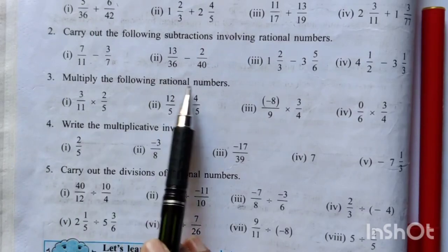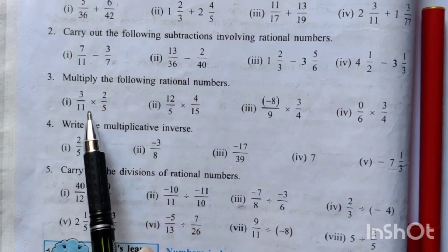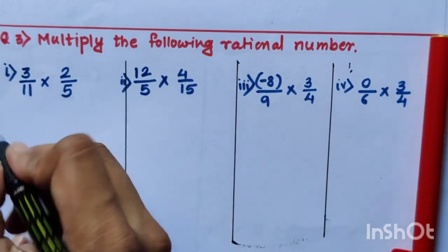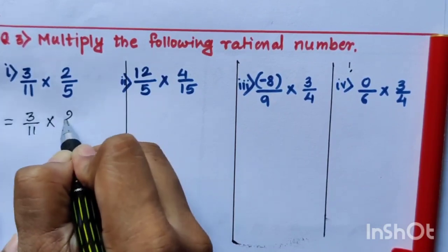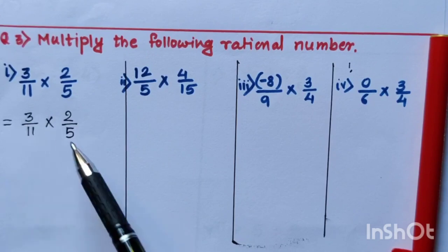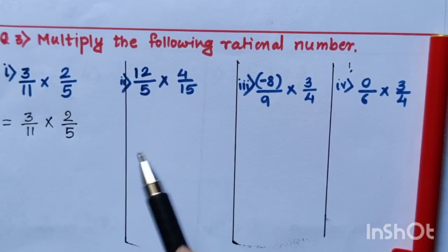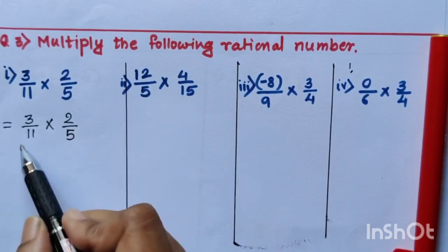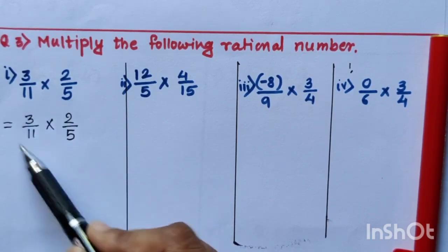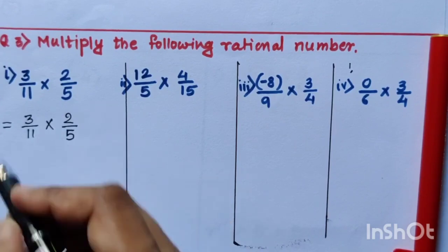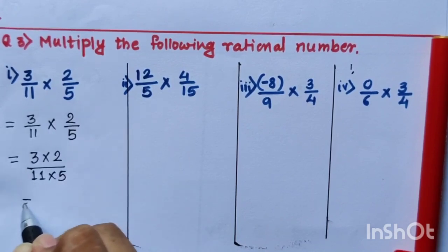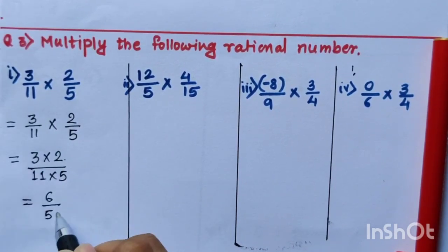Question number 3 says: multiply the following rational numbers. We have rational numbers with a multiplication sign between them. In multiplication, if it is possible to cancel numerator with denominator before multiplying, we do that first. Then we multiply numerator with numerator and denominator with denominator. The first sum is 3 upon 11 multiplied by 2 upon 5. All numbers here are prime numbers, so no cancellation is possible.